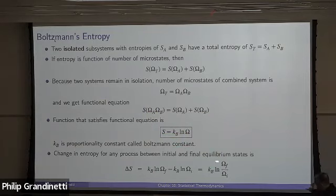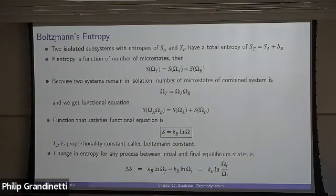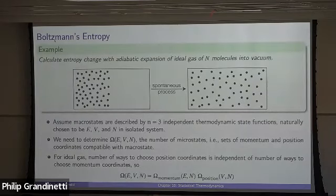For any change between two equilibrium states, from Boltzmann's expression we can calculate entropy change as the final minus initial entropy, which using the property of logs is just k_B times the log of the ratio of the number of microstates final over initial. That's a simple but impressively powerful result.